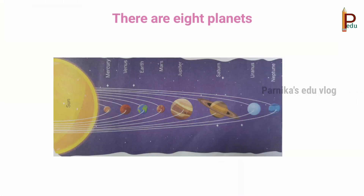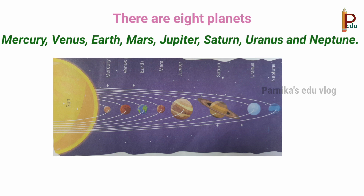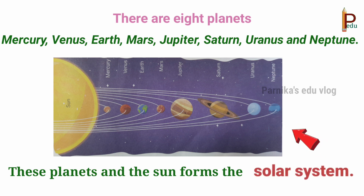There are eight planets: Mercury, Venus, Earth, Mars, Jupiter, Saturn, Uranus, and Neptune. These planets and the sun form the solar system.